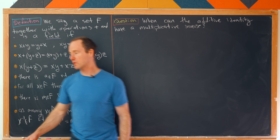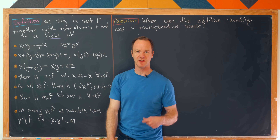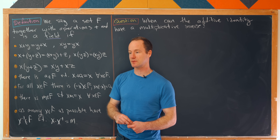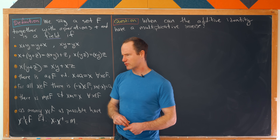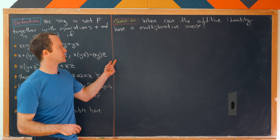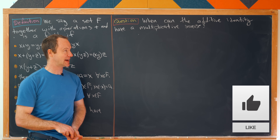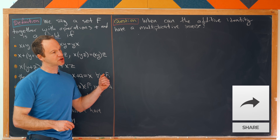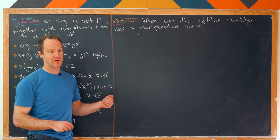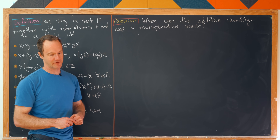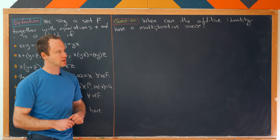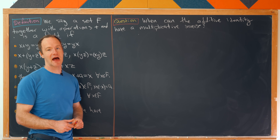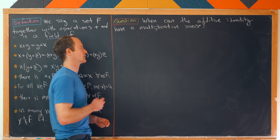On the last board we built this definition of a field by modeling it after some properties that the rational numbers have. That brought us to the following question: when can the additive identity of a field have a multiplicative inverse? In the rational numbers, the additive identity zero does not have a multiplicative inverse. Let's see if we can answer this question — when can that additive identity have a multiplicative inverse?